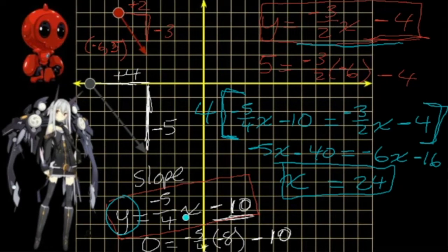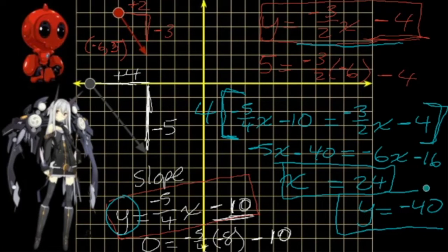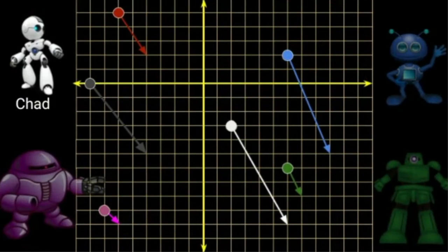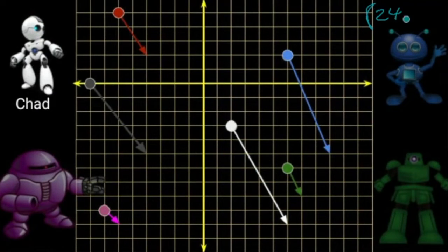Using either equation, I should get the same y value if I did things correctly. So negative three halves times 24, that is negative 36 minus 4. Y is negative 40. Double checking with this guy, negative five fourths times 24, that's negative 30 minus 10, negative 40. Our target is x is 24, y is negative 40. Way off screen. Each of the candidate robots will fire one shot at that same target.